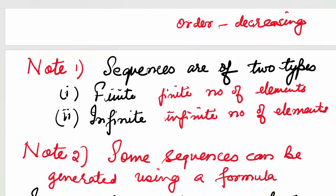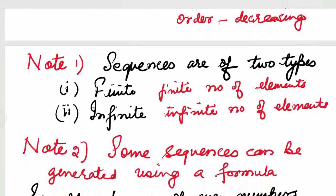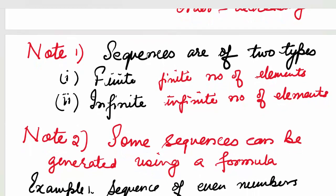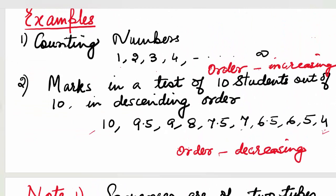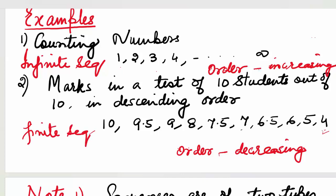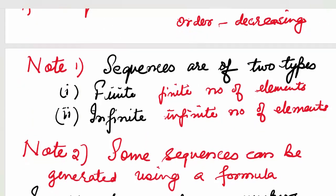Sequences are of two types. Whenever we have a finite number of elements in the sequence, we say the sequence is finite. When there are infinite number of elements, we say it's an infinite sequence. Going back to our examples: counting numbers form an infinite sequence because they go up to infinity. The marks of 10 students form a finite sequence, because there are only 10 students. So depending on how many elements we have in the sequence, it is finite or infinite.